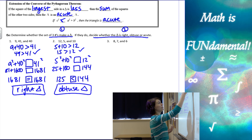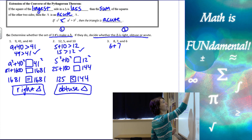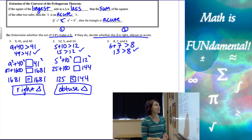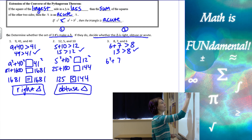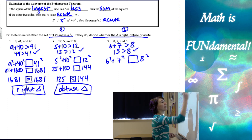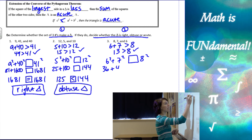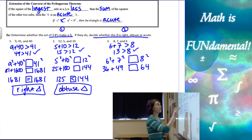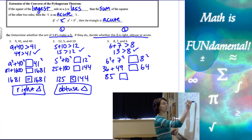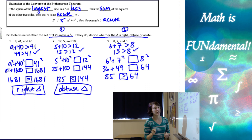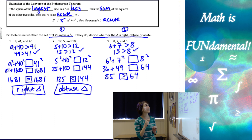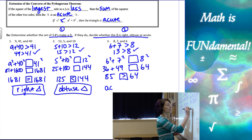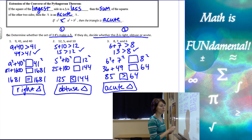For the last example with sides 6, 7, and 8: the two smallest sides, 6 plus 7, equal 13, which is greater than 8 — good. Now, 6 squared plus 7 squared versus 8 squared: that's 36 plus 49 equals 85, and 8 squared is 64. Since 64 is less than 85, c squared is less than a squared plus b squared, so this is an acute triangle.